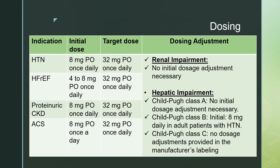Patients with heart failure with reduced ejection fraction can be given Candesartan an initial dose of 4 to 8mg once a day and can be titrated up to the target dose of 32mg once daily. For the indication of either proteinuric chronic kidney disease or acute coronary syndrome, Candesartan can be started at 8mg once daily to the target dose of 32mg once a day.